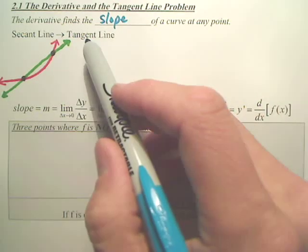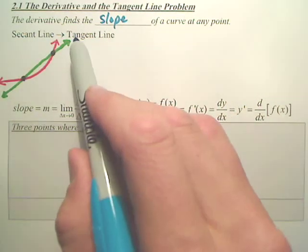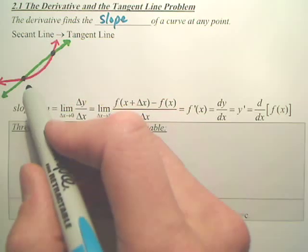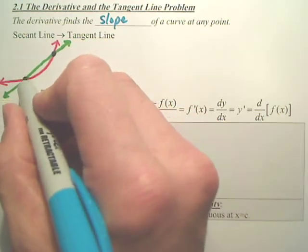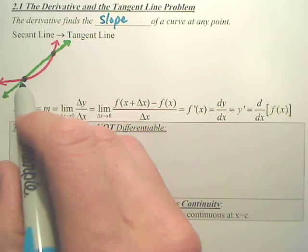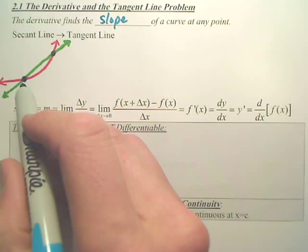A tangent line - a secant line to a tangent line. What a tangent line is, is if I have this curve, at this point right here, if I wanted the line perpendicular, or the slope at that point, it's called a tangent line. The tangent line is perpendicular to the graph at a given point.